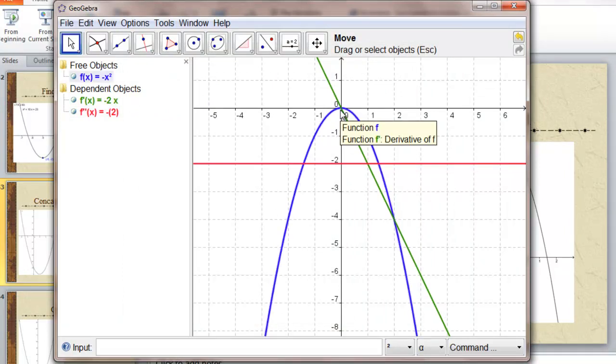See, the original function is concave down. Its slope is always decreasing. So its acceleration, the rate of change of its slope, is always negative.